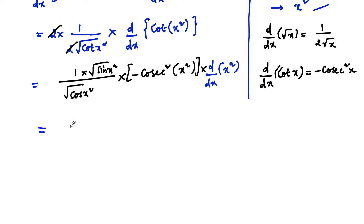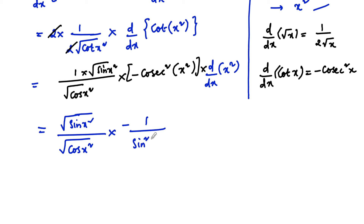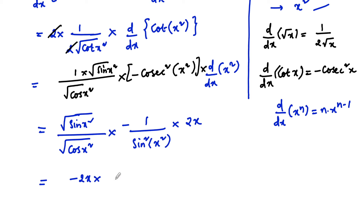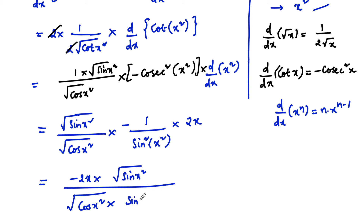We can write √(sin(x²))/√(cos(x²)) times −1/sin²(x²) times 2x. Simplifying, the √(sin(x²)) in the numerator partially cancels with sin²(x²), leaving √(sin(x²)) · √(sin(x²)) = sin(x²) in the denominator, along with √(cos(x²)).